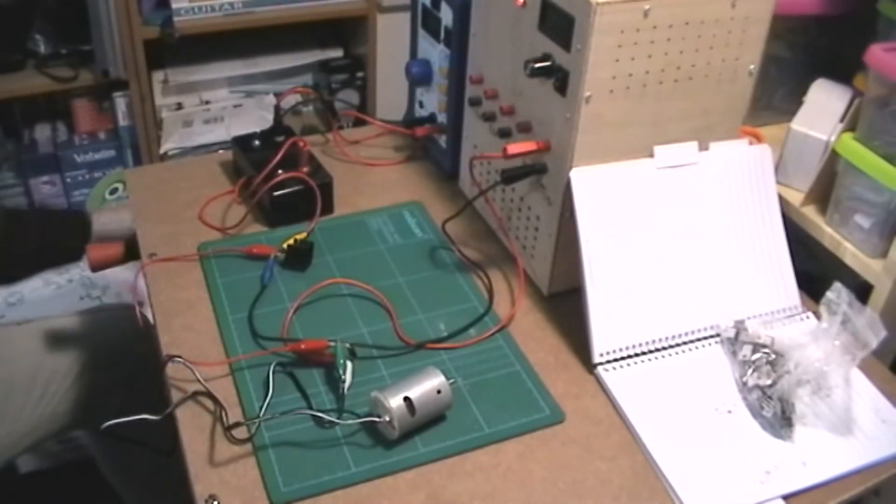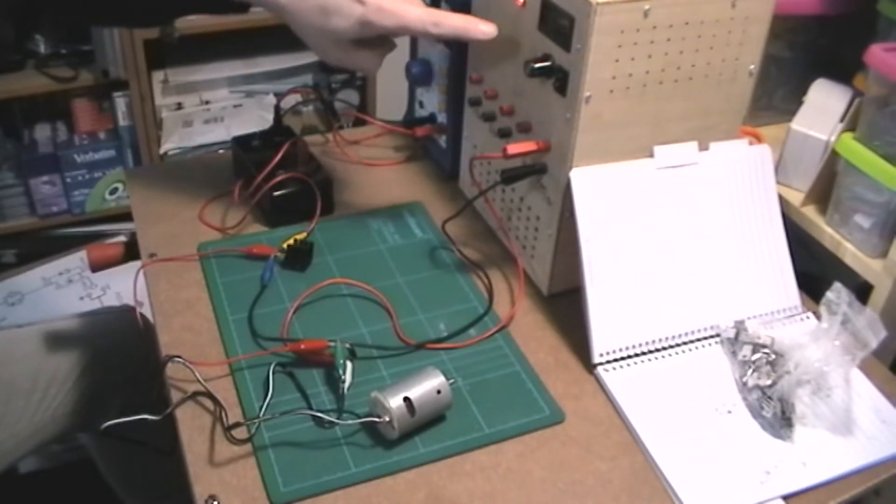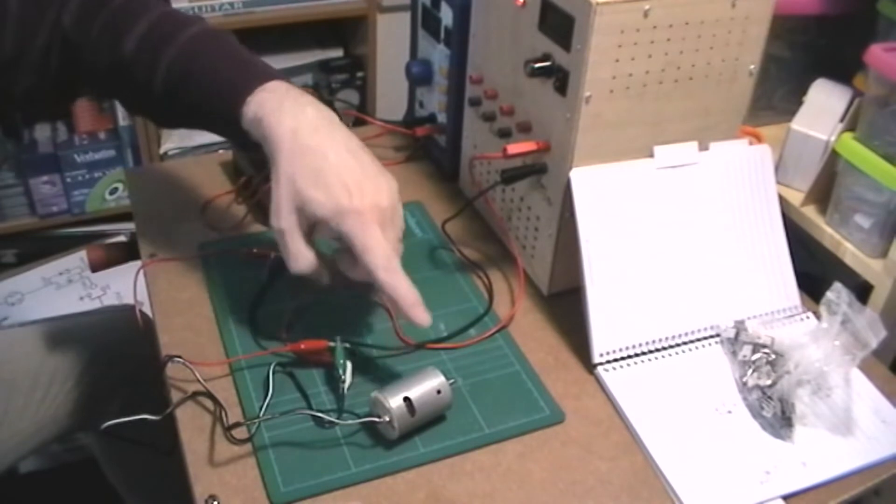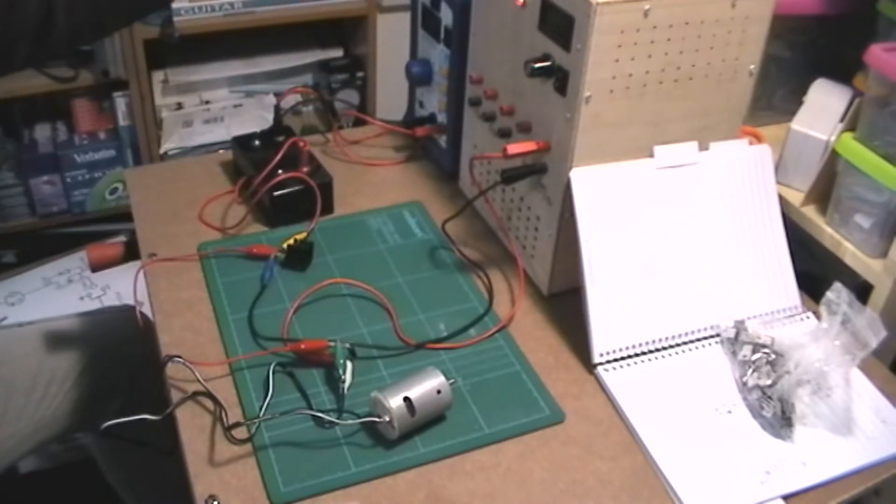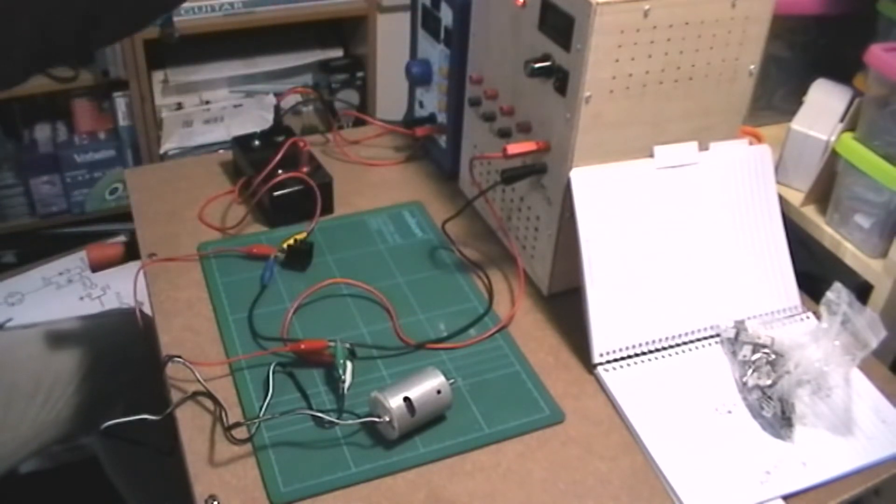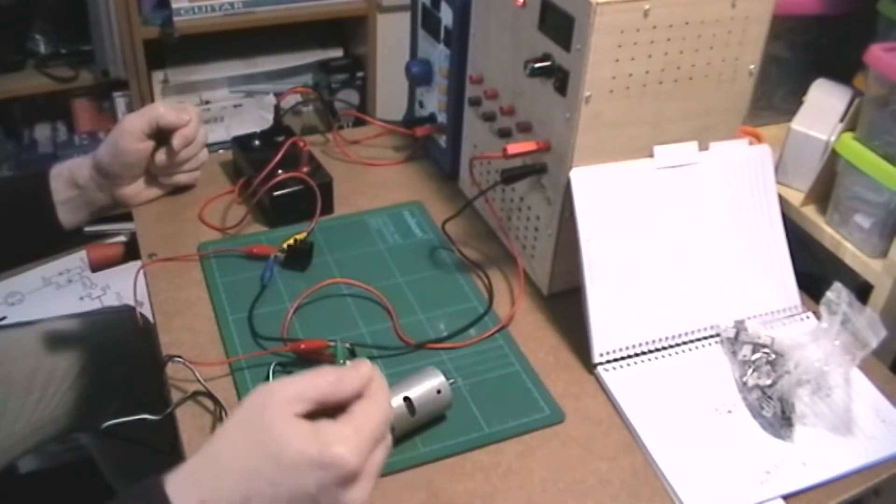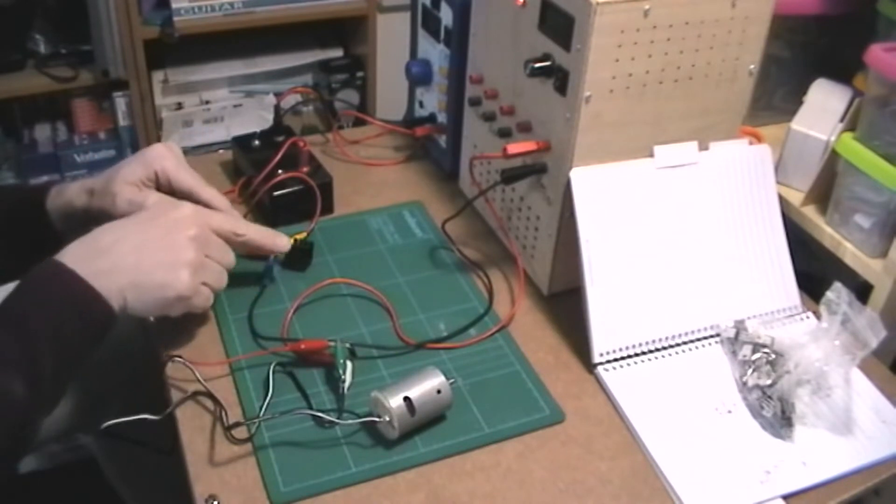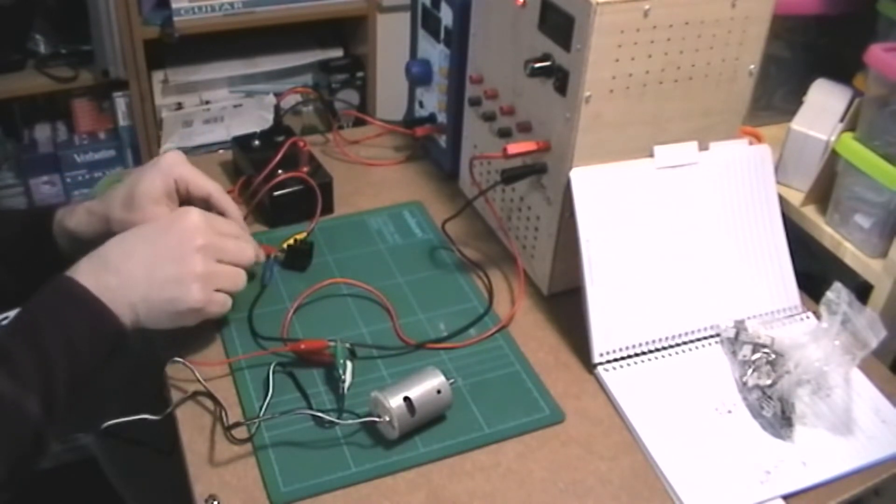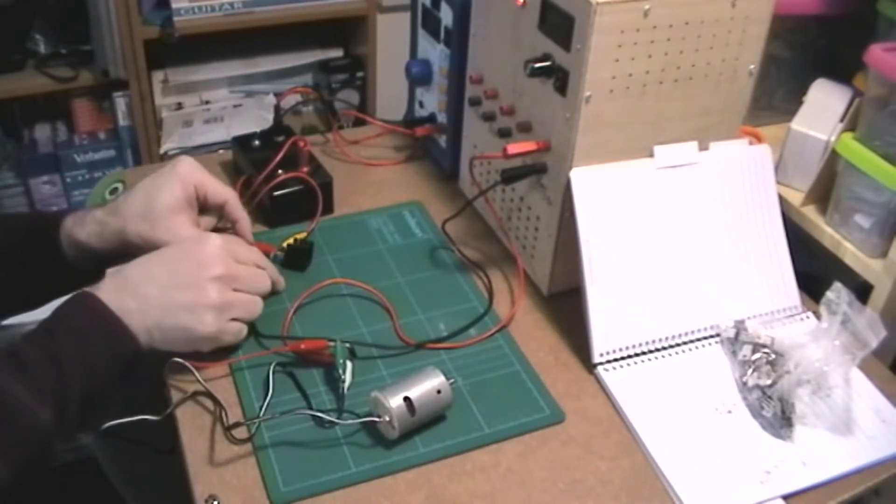So I have here two power supplies. This big one is going to supply the 7 volts to the motor and the MOSFET and the blue one is going to supply the 10 volts to the gate. So let's turn it on and see what we get. As you can see on here I carefully, carefully connect this up.